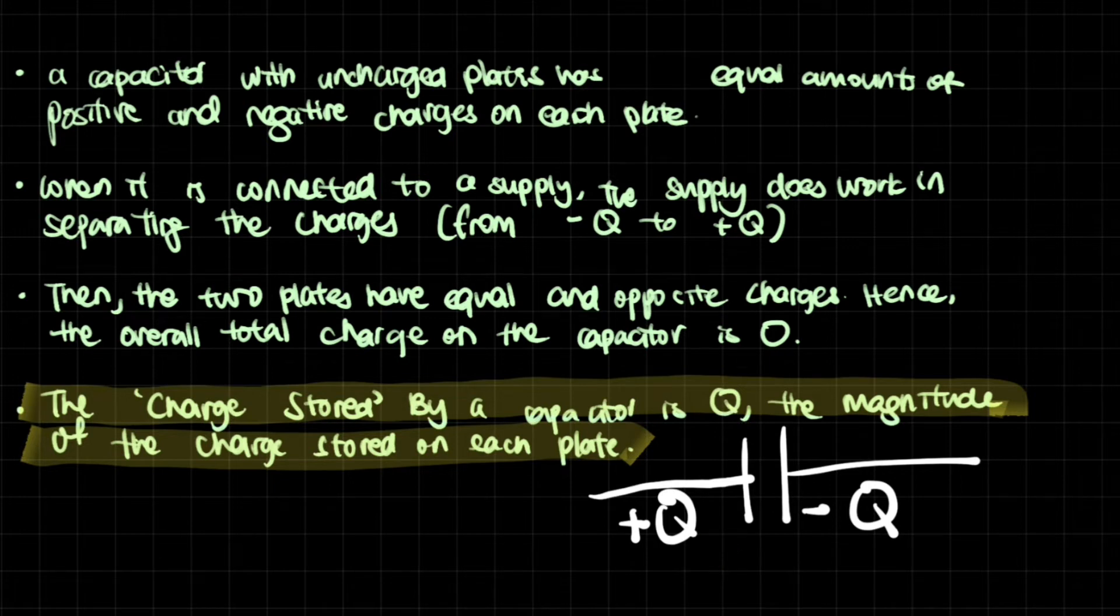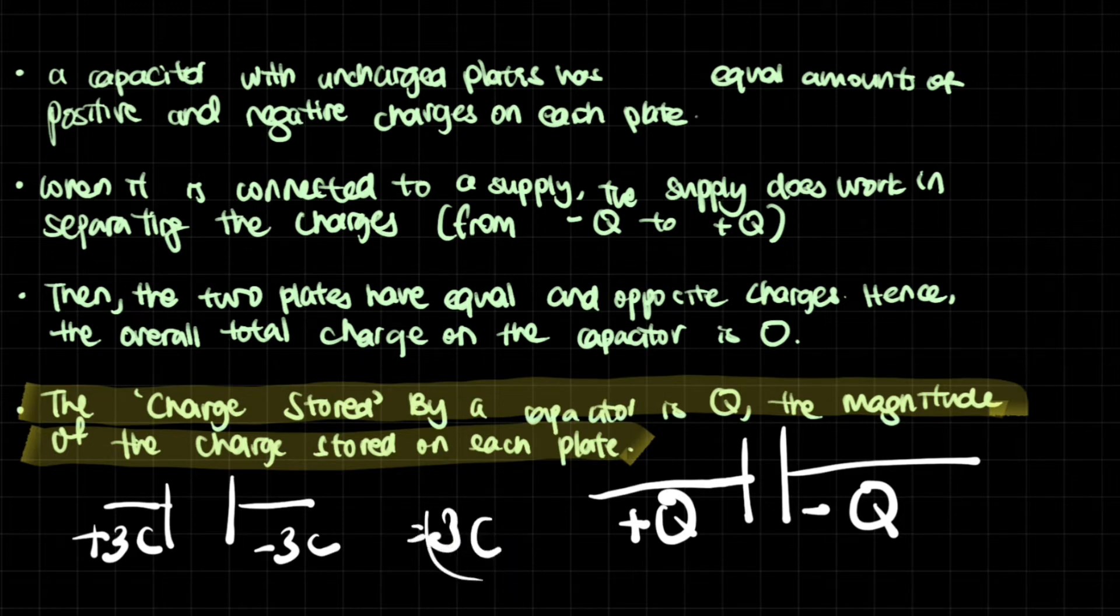And you might be a little confused because actually the difference in the quantity of charge between these two is actually two Q. For example, if we had maybe positive three Coulombs and then negative three Coulombs, what we put as the charge stored would be three. Three C is the charge stored. However, the difference between these two is actually six Coulombs. Well, why we have to put this like this? There's a reason.